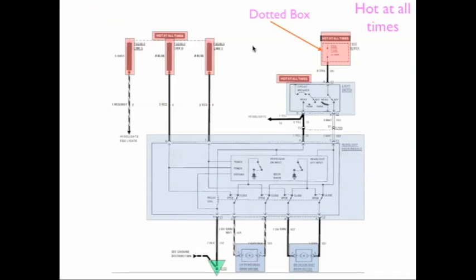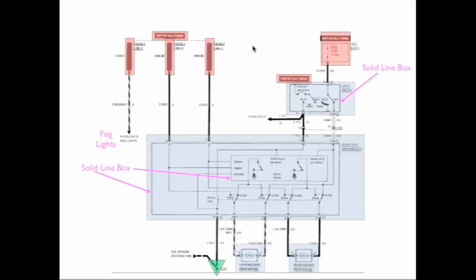Over on the right you see a dotted box, which means this is one fuse but there's more — so this fuse is inside the main fuse box. We also have some solid line boxes. This switch is solid so all the connections are here. You have an outer solid box and an inner solid box — they're both control units but they are connected inside, meaning there's circuitry connecting these two.